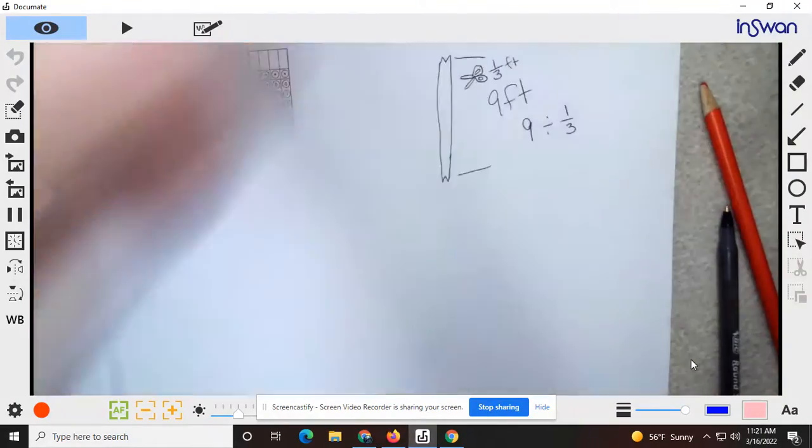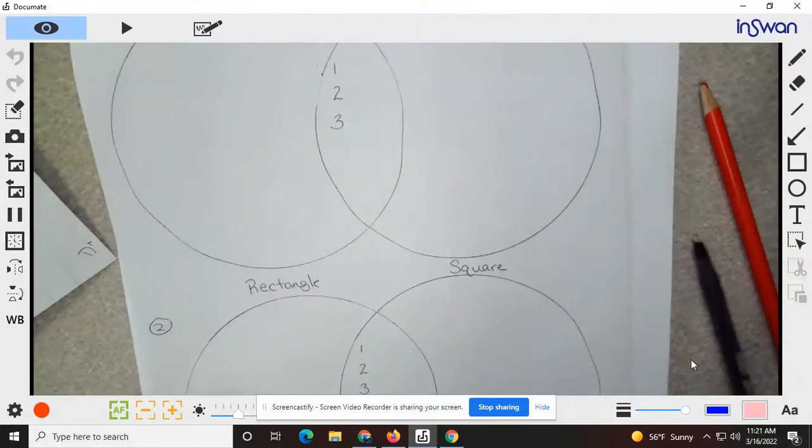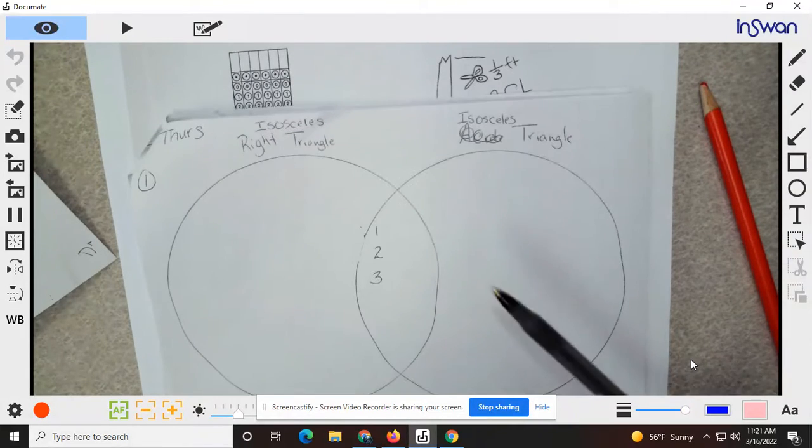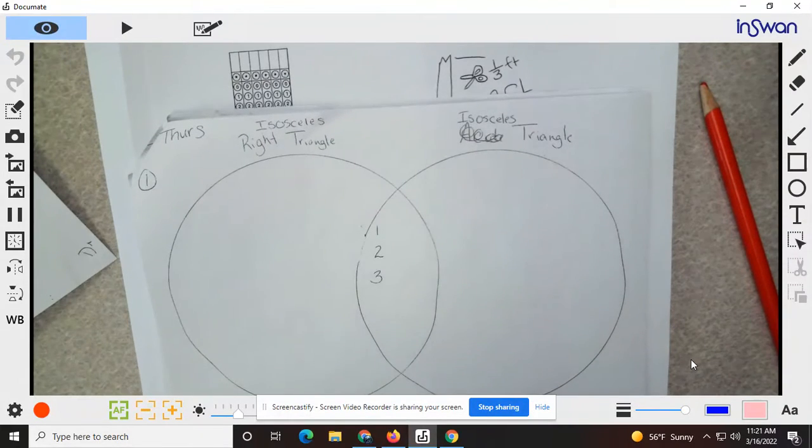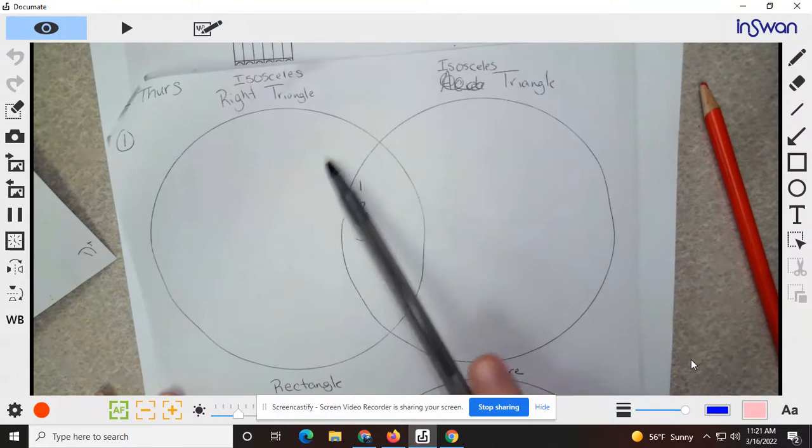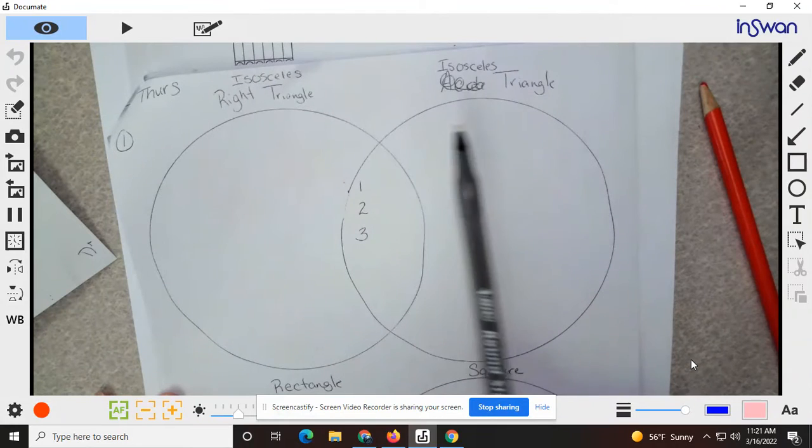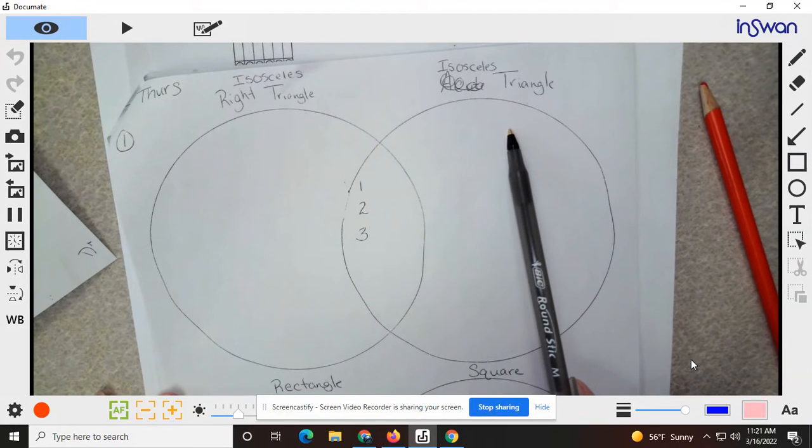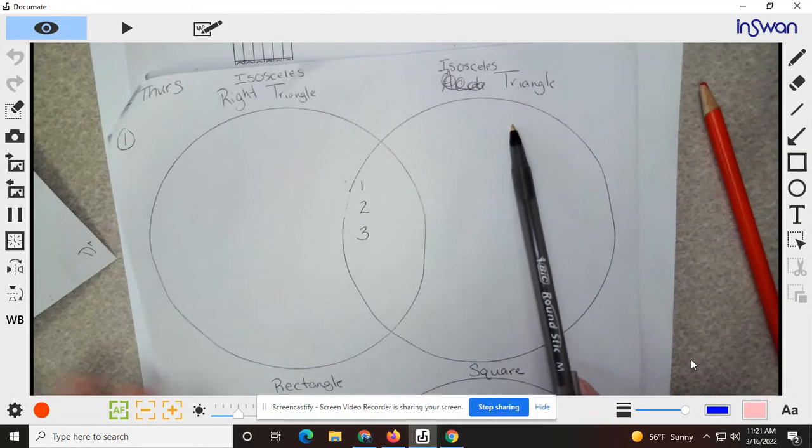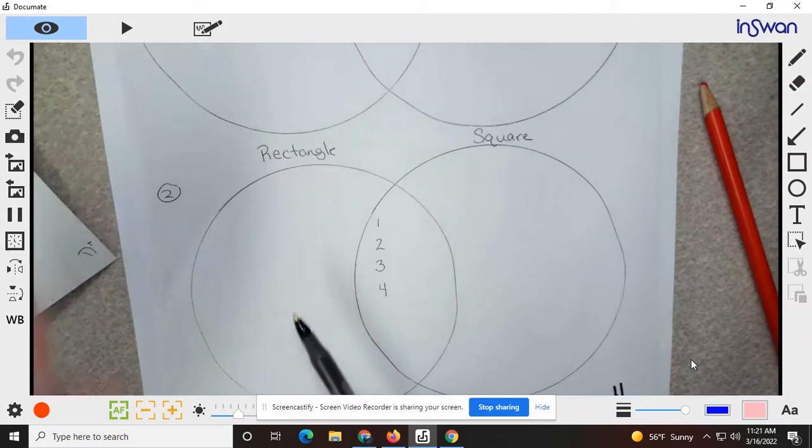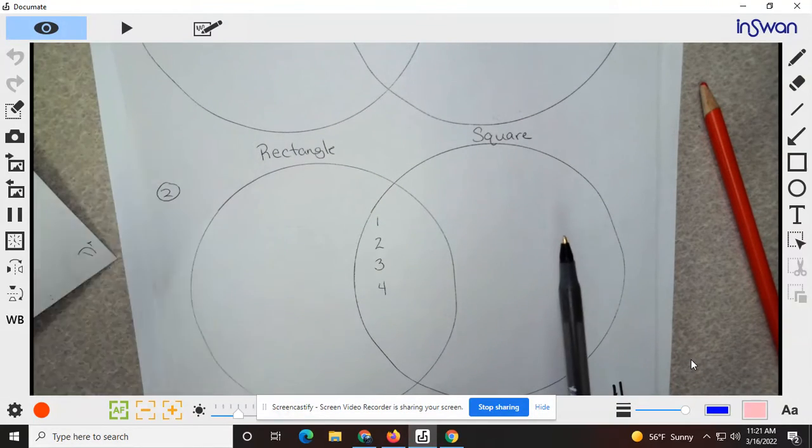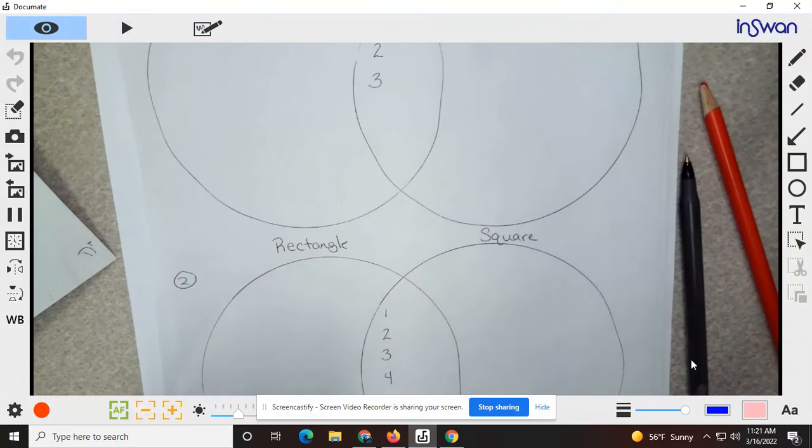Okay, tonight's homework is kind of like what we did in class. You need at least three on the top, four on the bottom. It's how isosceles right triangles are different than isosceles triangles, and how squares and rectangles are the same and different. So fill in those and I'll see you in the morning.